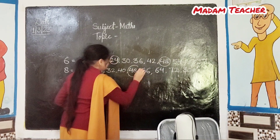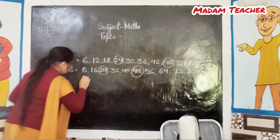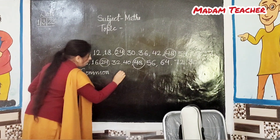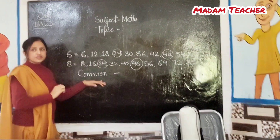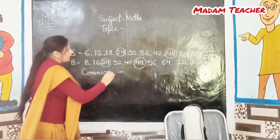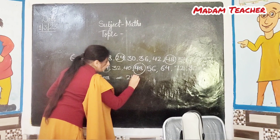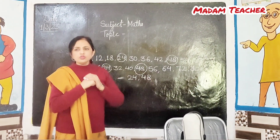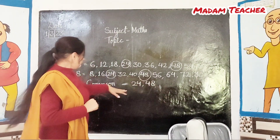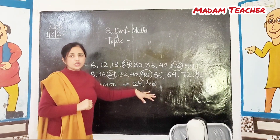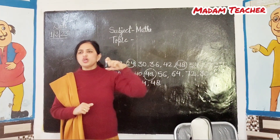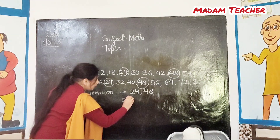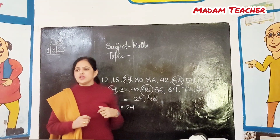Exactly. So the common numbers — speak one more time. Common numbers are 24 and 48. Okay, 24 and 48. Now tell me, which one is the smallest number? 24. Yes, 24 is the smallest number.